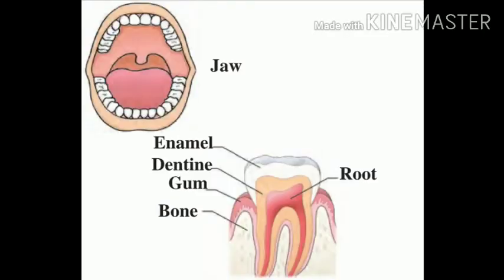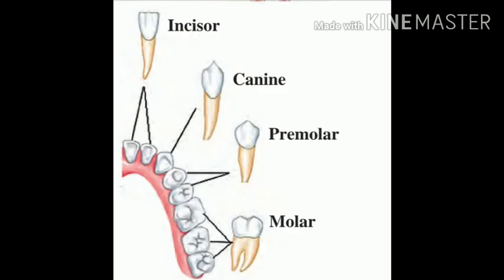Now let us study the tooth structure. Looking at the upper jaw and lower jaw, we can see two different series of teeth arranged in each. There are four types of teeth. The upper part of the tooth is covered with enamel, followed by dentine in the middle, with gum at the side, and inside it has a bone with roots. Incisors are useful for cutting, canines are useful for tearing, and premolars and molars are used for chewing.